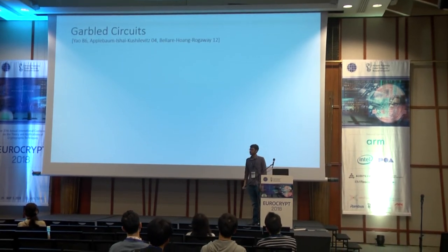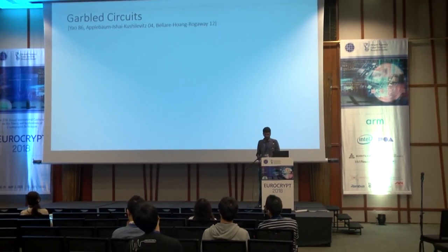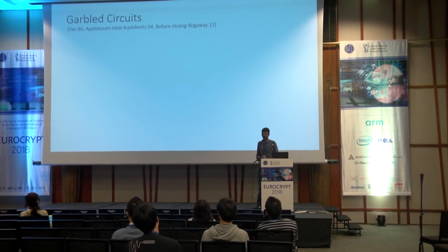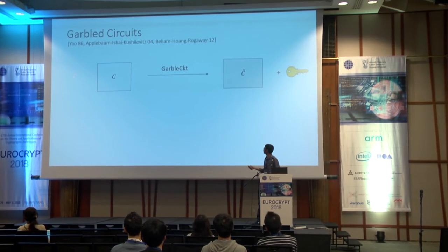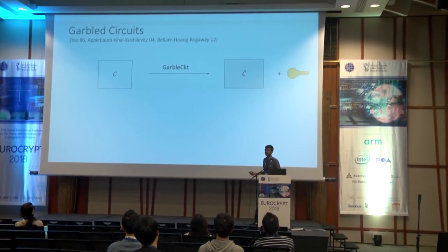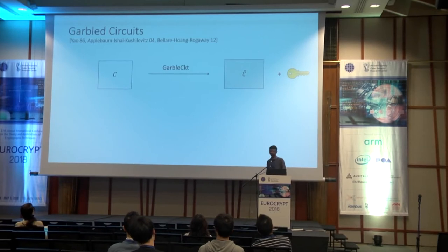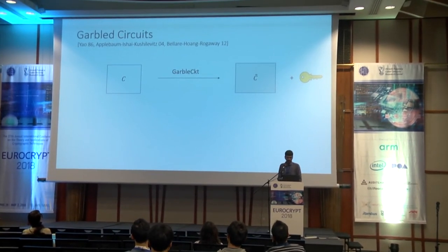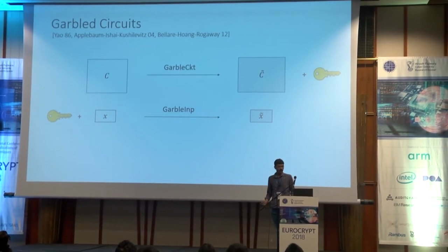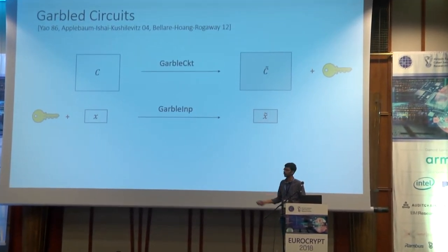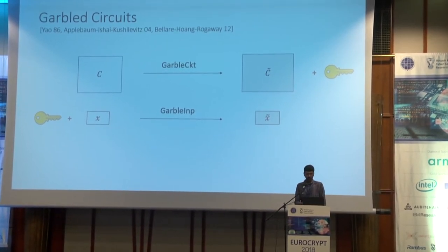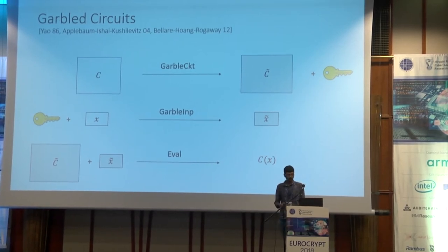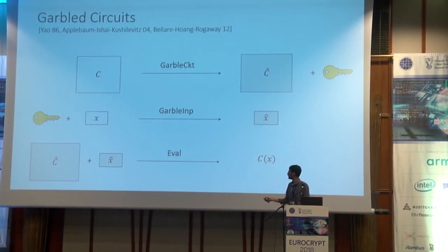Let me first give a brief overview of garbled circuits. Garbled circuits consist of three algorithms. The first is the circuit garbling algorithm, which takes a Boolean circuit C and outputs a garbled circuit C-tilde along with a secret key. The second is the input garbling algorithm, which takes input X and the secret key and outputs the garbled input X-tilde. The third is the evaluation algorithm, which takes the garbled circuit C-tilde and garbled input X-tilde and outputs C of X.